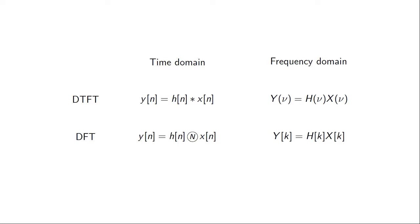If we look at the two transforms that we have at our disposal, we have the discrete time Fourier transform and we have the discrete Fourier transform. In the time domain what we want to compute is the convolution between h of n and x of n. The discrete time Fourier transform states that in the frequency domain we could obtain that by multiplying the Fourier transform of the input signal with the frequency response of the system. The problem is that these transforms are continuous functions of the parameter, so it's unclear how you would compute this, or even if you can compute this in finite time.